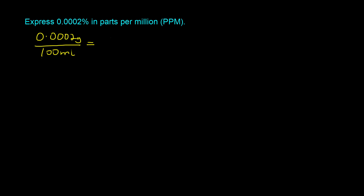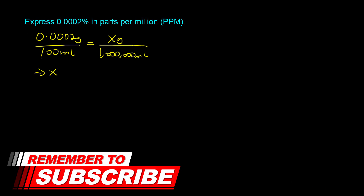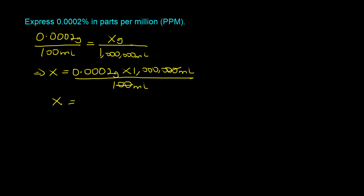We can now set up a proportion to determine how many grams are in a million milliliters — that is the definition of PPM on the right-hand side. Solving for X, our unknown, we get the quantity in PPM. X equals 0.0002 grams times a million milliliters divided by 100 milliliters. We can cancel zeros: these two zeros take care of the two zeros in 100, so X equals 0.0002 grams times 10,000, which equals 2. The answer is 2 PPM.